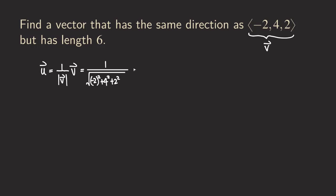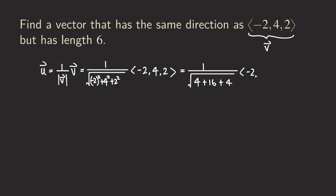Now what about the v? The v is simply just copying it: negative two, four, two. So now we can do the calculation. We get one over the square root of four plus 16 plus four, and then we have the vector negative two, four, two. This is four plus 16 plus four.